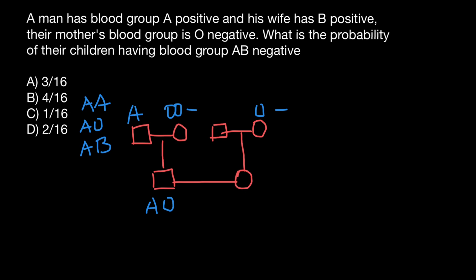Now let's look at the female. We are told his wife is B positive, so she belongs to blood group B. From her mother's side, she can only receive the O allele, because blood group O is made by only one genotype: O-O. So she is obligate B-O genotype. Her father can belong to blood group B with genotype B-B or B-O, or blood group AB — in all three cases he can give her the B allele. So the female's genotype is B-O.